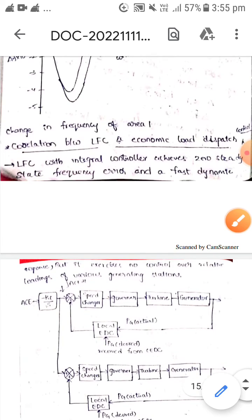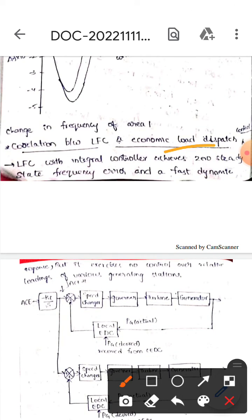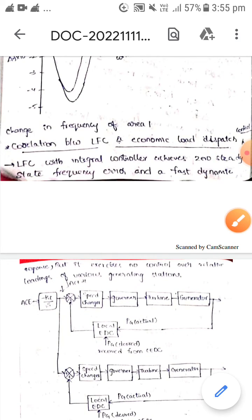This is all about the correlation between load frequency control and economic load dispatch control. I hope you understand guys. Thank you.